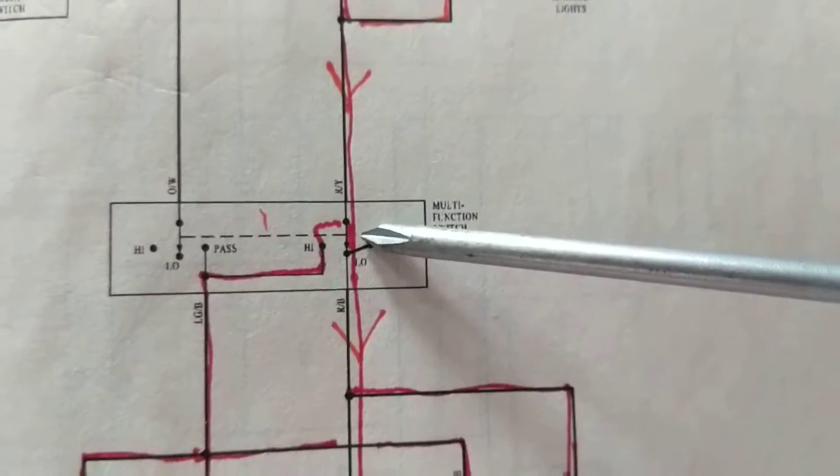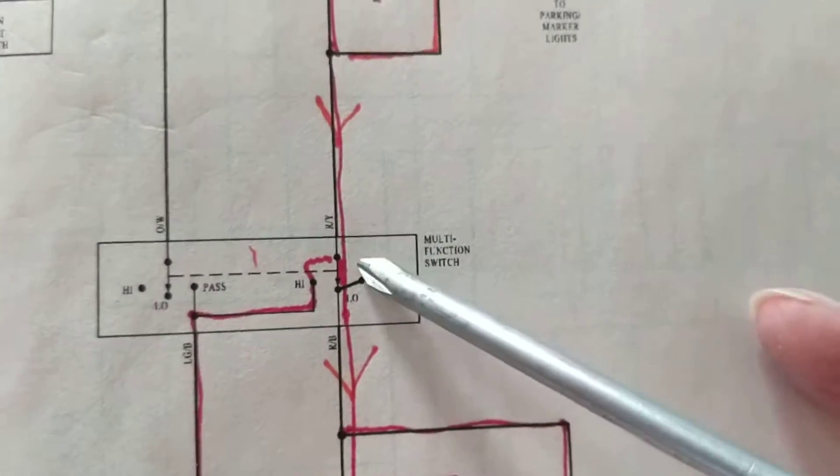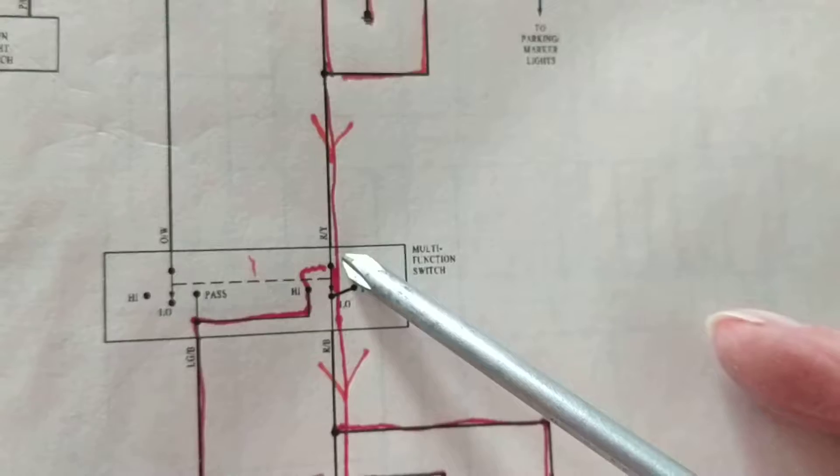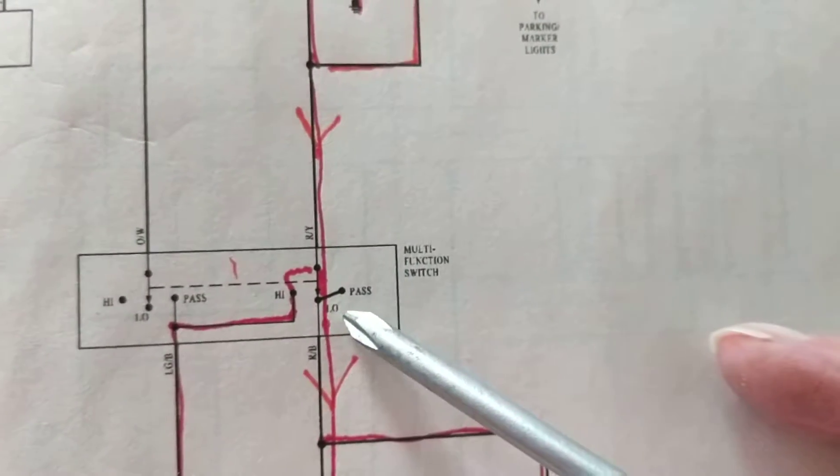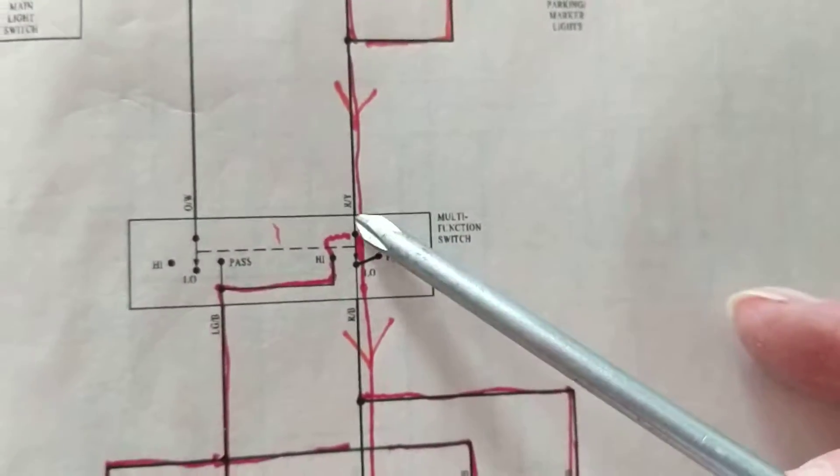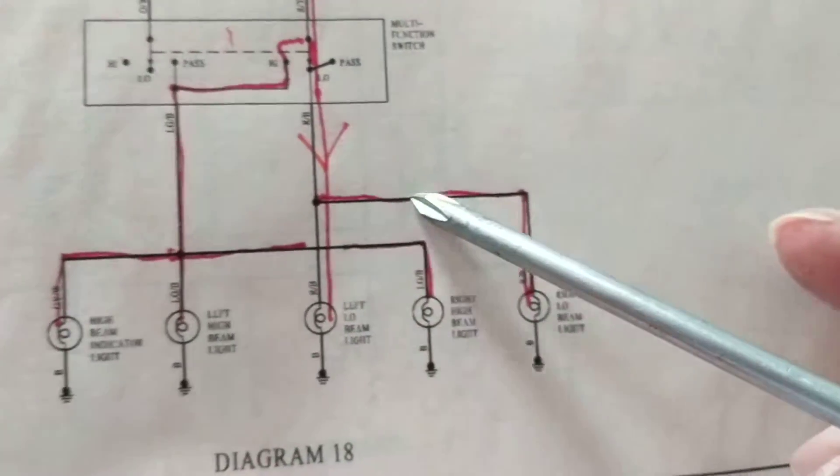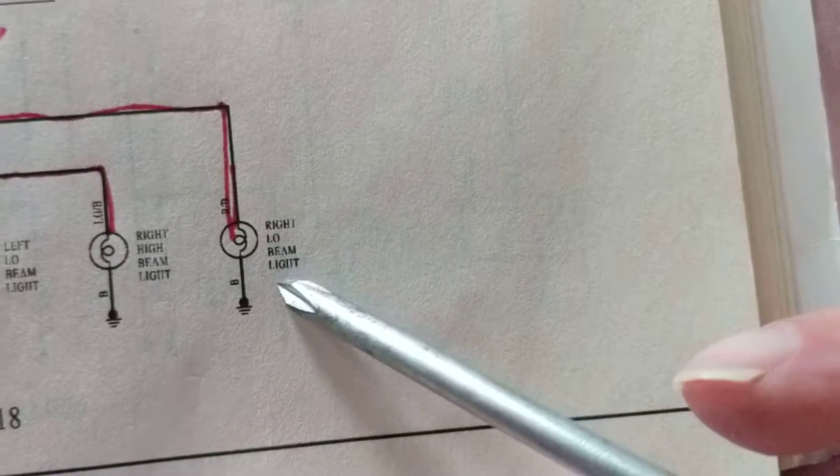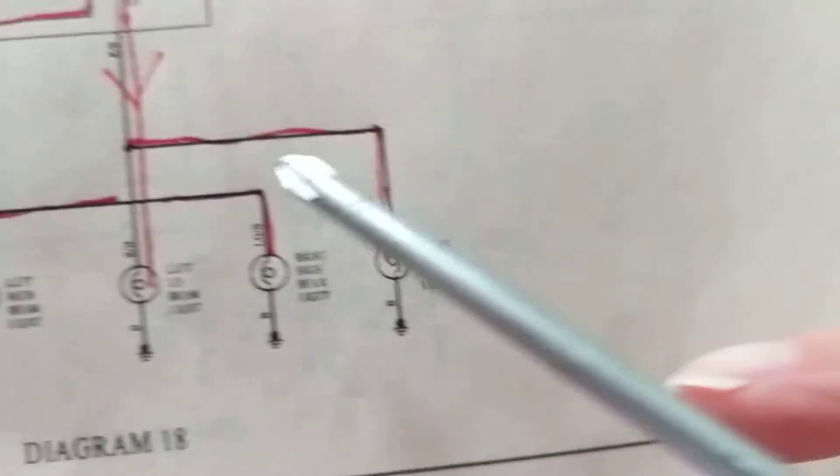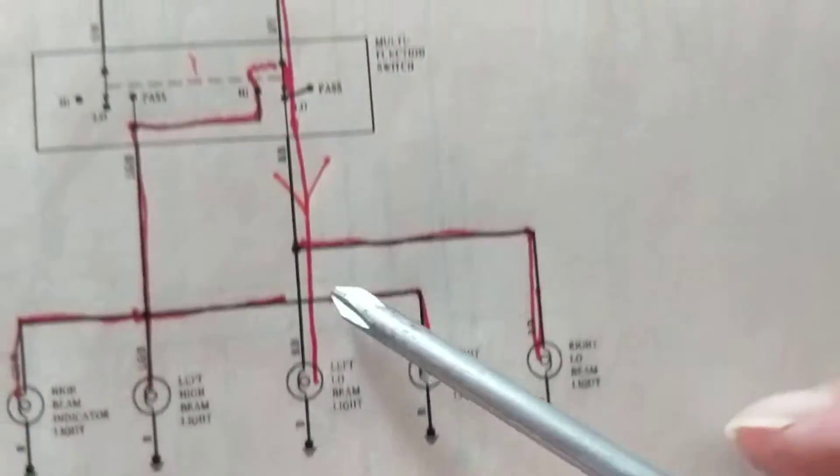Now, this is a multi-function switch. You can have headlamps either in a high beam position or low position. If we have it in a low position, we are going through here. Right low beam, left low beam will be turned on.